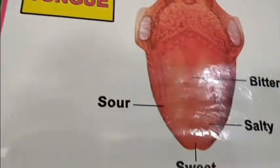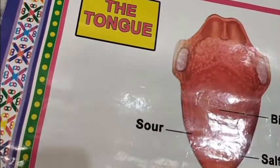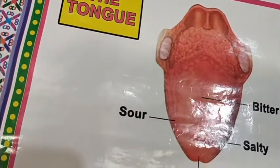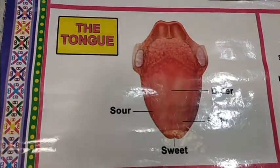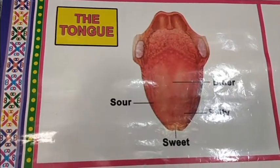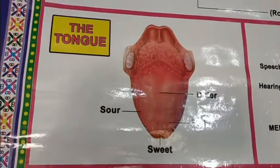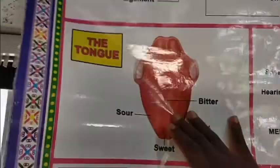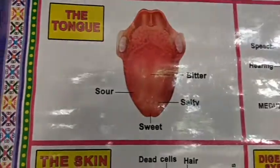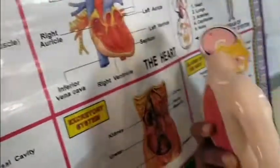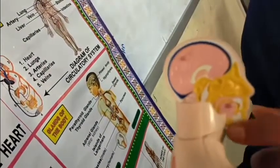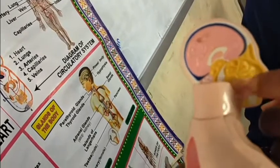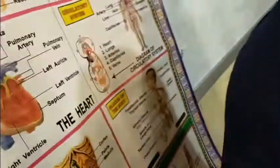The taste buds are tiny swellings on the exposed surface of the tongue and they are the receptors for chemicals in food. We have different chemicals in our food. These receptors receive chemicals from our food and are connected to sensory nerve endings that lead to the central nervous system. Several nerves connect the tongue to the brain, which interprets what we are tasting.